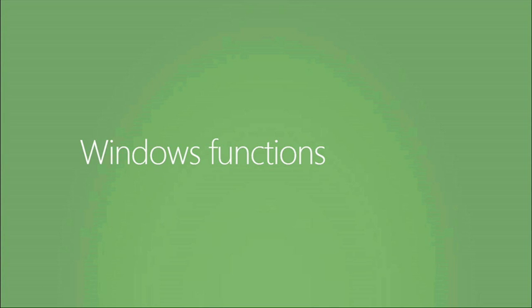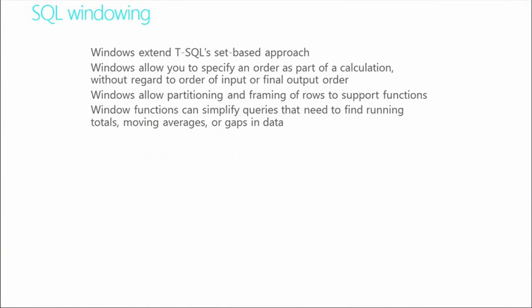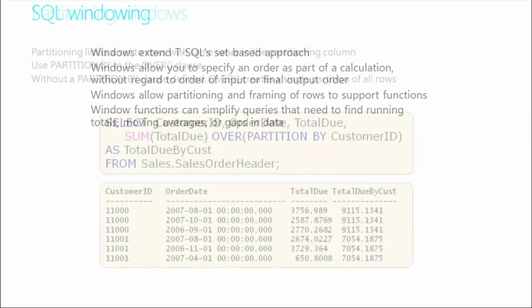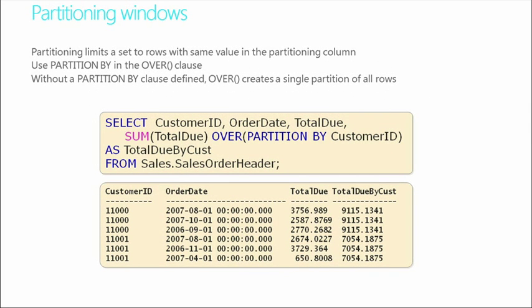Let's move into our next section, which is Windows Functions. We briefly introduced a couple already, and Tobias did a great demo on one earlier. Within here, we're going to look at SQL windowing, which extends T-SQL's set-based approach. They allow you to specify an order as part of a calculation, allow partitioning and framing of rows to support certain functions, and they can simplify queries by running totals or moving averages or even finding gaps in data. The idea of partitioning windows limits a set to rows with the same values in what's called a partitioning column. We use a partition by statement in the over clause, and without a partition by clause defined, the over creates a single partition of all rows.